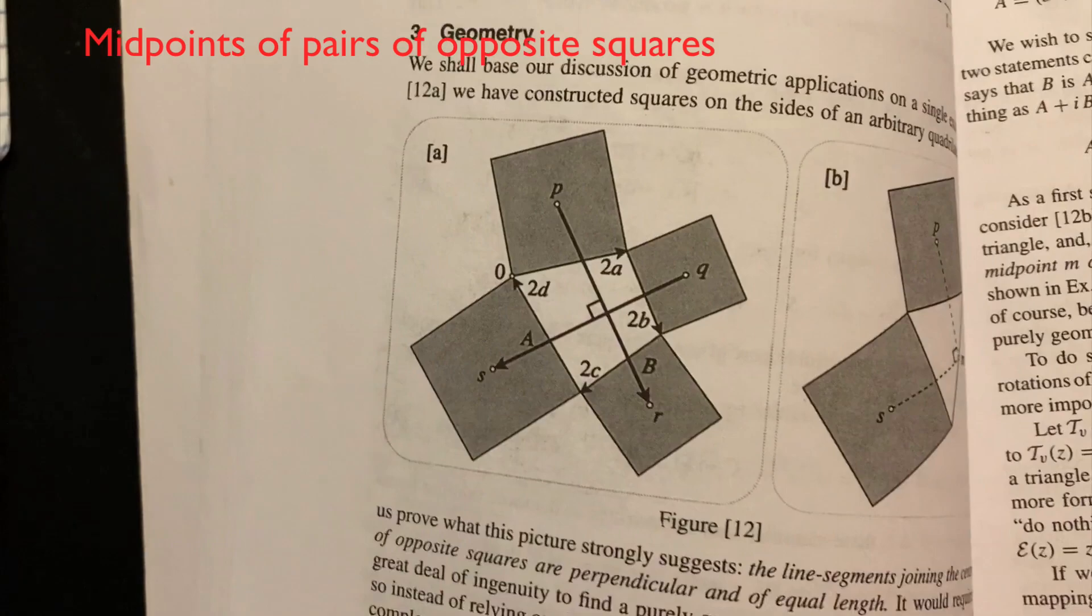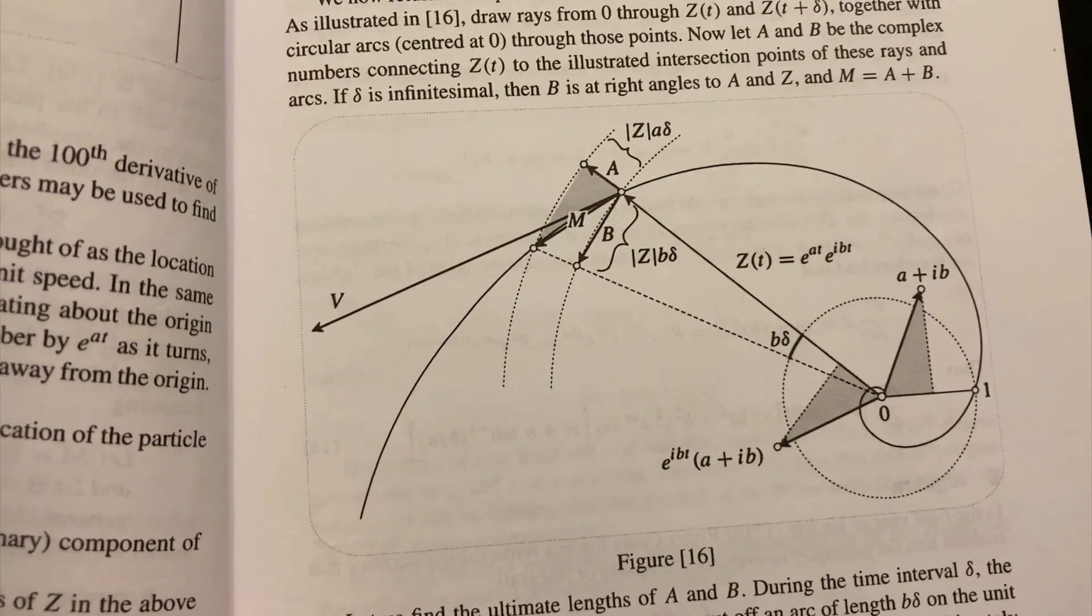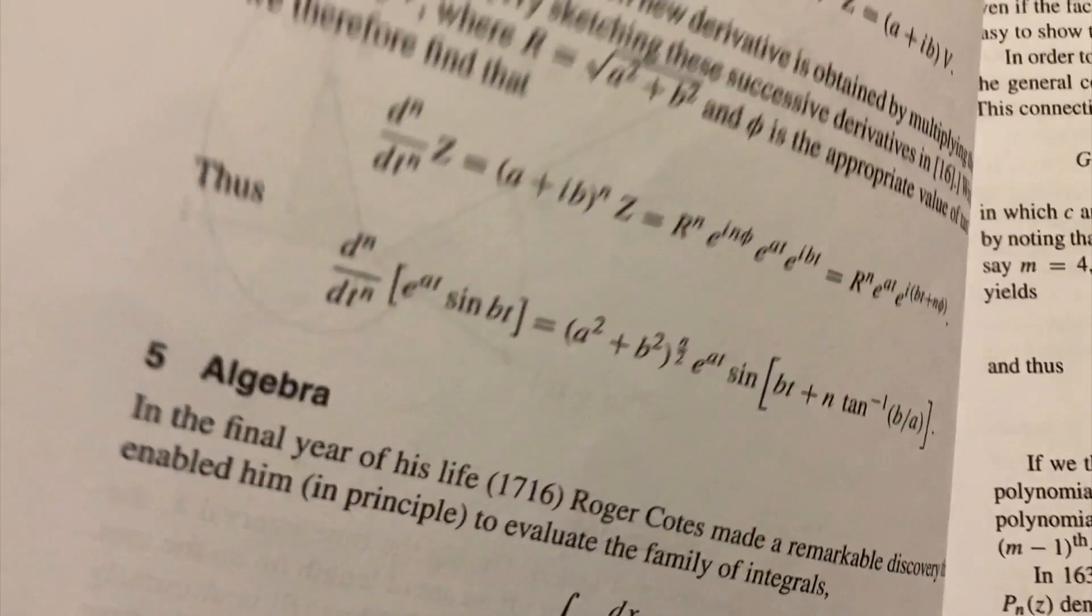Another application includes using complex arithmetic to interpret the parametric curves that arise in spiraling, and that ultimately leads to a derivation of the formula for the nth derivative of e to the a t times sine of b t.